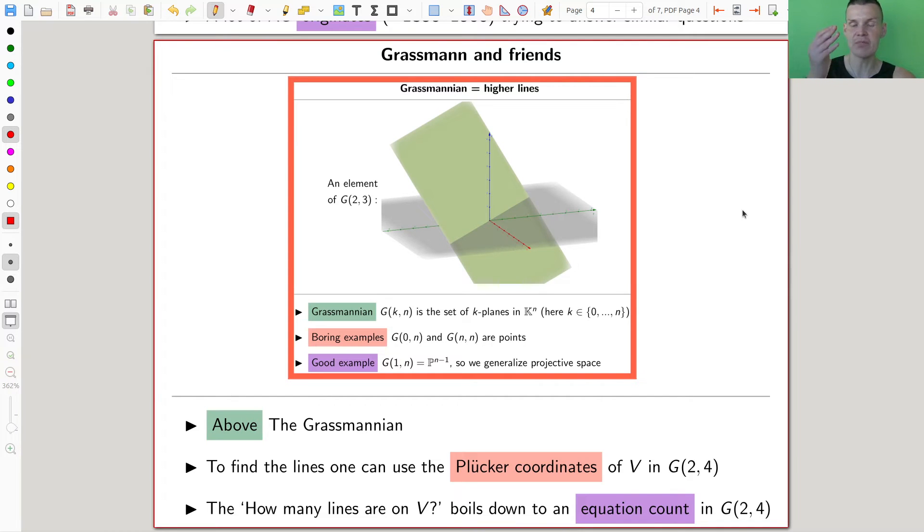But initially, what people developed is the Grassmannian, as you should think of like lines in 3-space, so G(3,1), but it's projectivized somewhat, so it's G(2,4), so everything is going up. Don't worry about it too much. So there is this Grassmannian G(2,4), and there are the Plucker coordinates that we discussed, and you can actually find the lines using the Plucker coordinates in the Grassmannian, and then it's just a matter of playing with matrices, and you can pull back the lines to the surface.